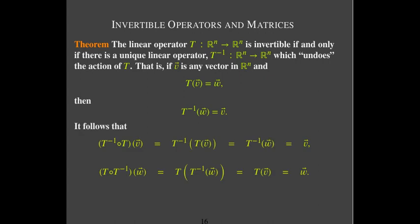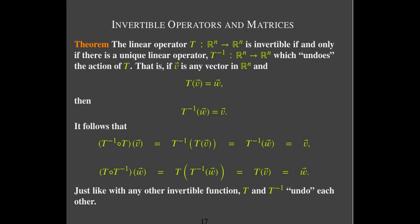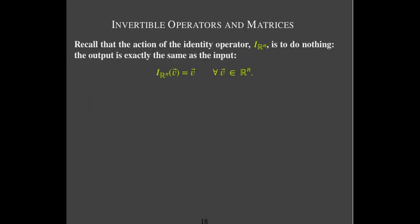In composition notation: if v is the input to T, T does something to it, and T-inverse undoes that, so you get v back again. If w is the input to T-inverse, T-inverse does something to it, then T undoes whatever T-inverse does, and you get w back. So T and T-inverse undo each other.